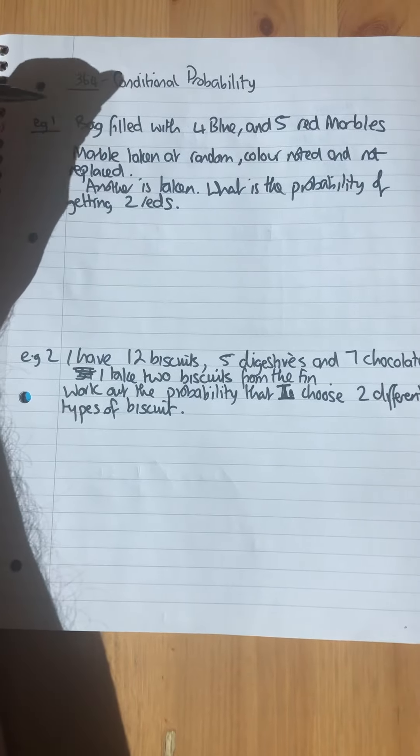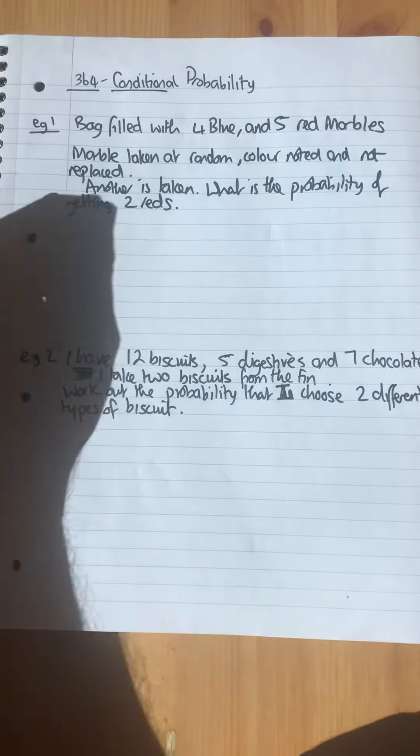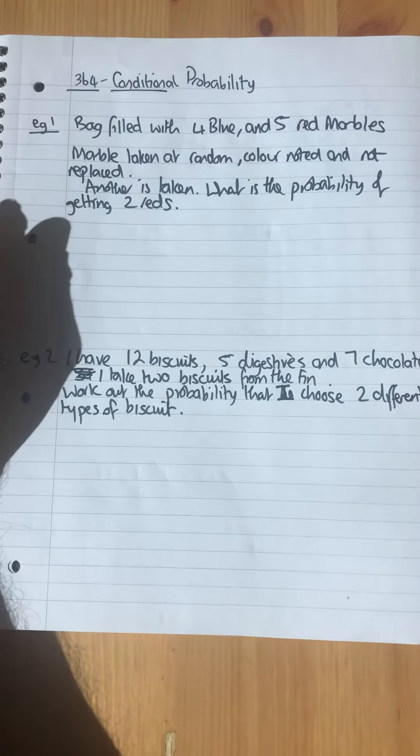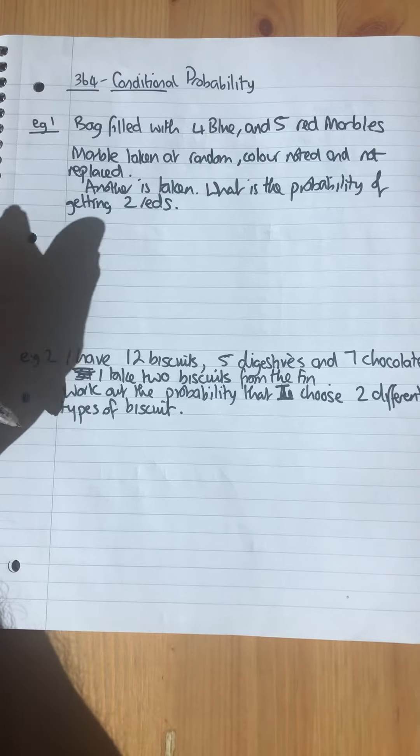Okay, this is 364 conditional probability. This is quite a difficult topic, you're looking at a grade 7-8 topic. Apart from algebra which is at grade 8-9, this is one of the hardest types of probability.